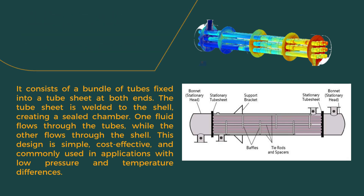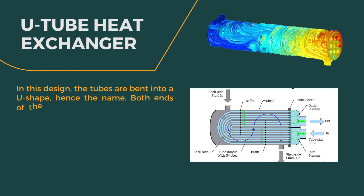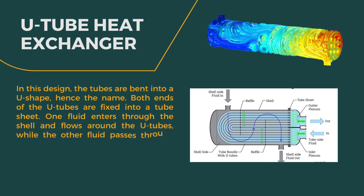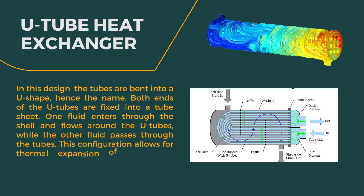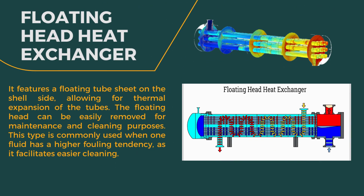Next up is the U-tube heat exchanger. In this design, the tubes are bent into a U shape, hence the name. Both ends of the U-tubes are fixed into a tube sheet. One fluid enters through the shell and flows around the U-tubes, while the other fluid passes through the tubes. This configuration allows for thermal expansion of the tubes, making it suitable for high temperature differentials.